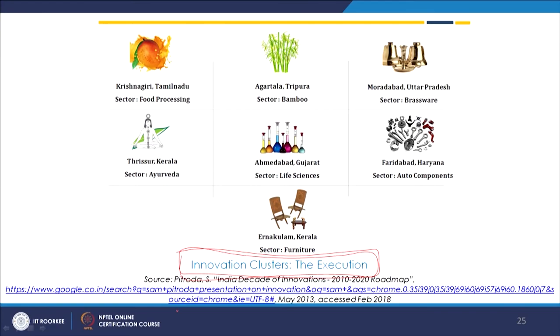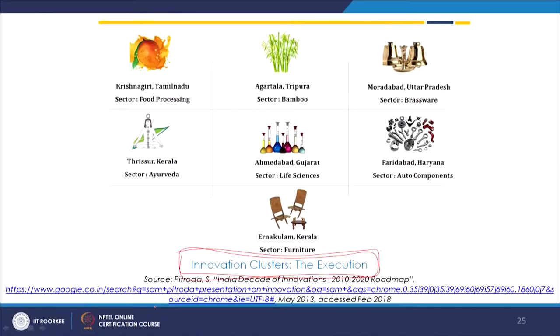Already a lot of work has been done and some clusters have been identified where the innovation and technology part has been executed to some extent. Some sectors identified include the food processing sector, the bamboo sector — we have been talking about the Rhingal craft of Uttarakhand, which is a dwarf bamboo, and here it is Tripura.